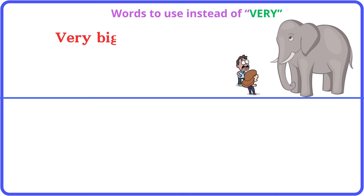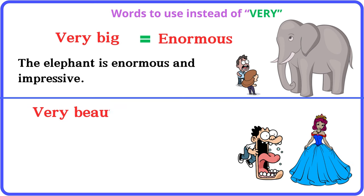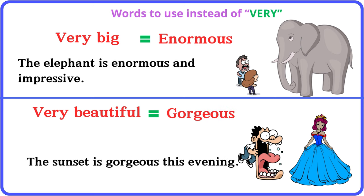Very big: enormous. The elephant is enormous and impressive. Very beautiful: gorgeous. The sunset is gorgeous this evening.